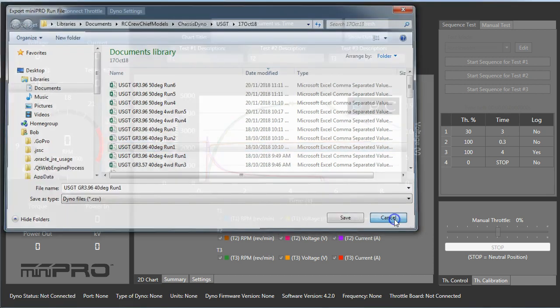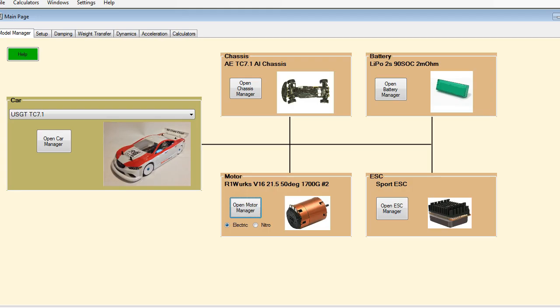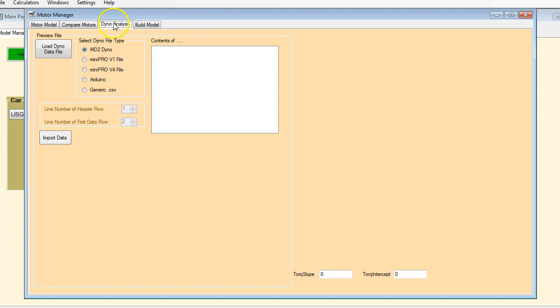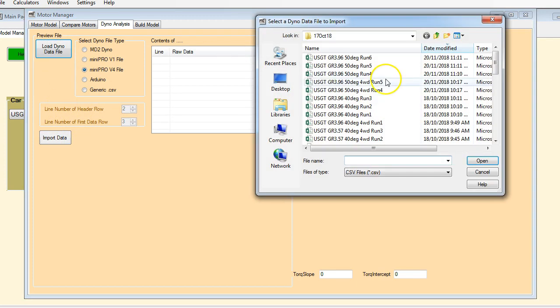Okay, so let's switch over to RC Crew Chief and open the motor manager and go to the dyno analysis tab. And then to load in files, all you need to do is select the file type. So there's mp2 Mini Pro v1 file, there's a v4 file format which is what we're up to now, there's also my little Arduino, and if you have some generic data you can use that and import it as well.